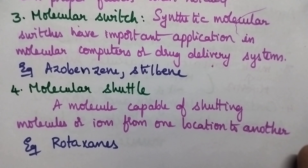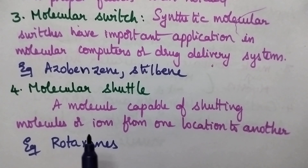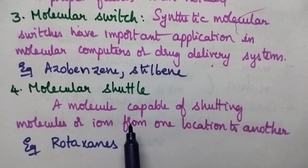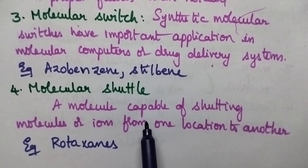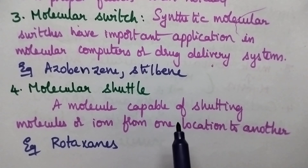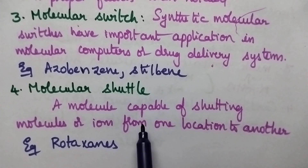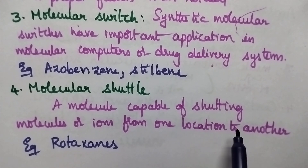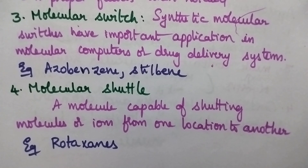Coming to the molecular shuttle — a molecular shuttle is a molecule that is capable of shuttling either molecules or ions from one place to the other place. The best example includes rotaxins.